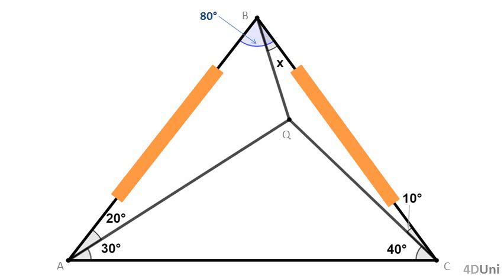Let's see how to calculate x. We can see that x is the difference between the measure of angles ABC and ABQ. We know the measure of angle ABC — it is 80 degrees — but we don't know the measure of angle ABQ. We could try to calculate it working in triangle ABQ, but we don't know the measure of angle AQB. We can calculate the measure of angle AQC, because we know the other two internal angles of triangle AQC, but that doesn't help.